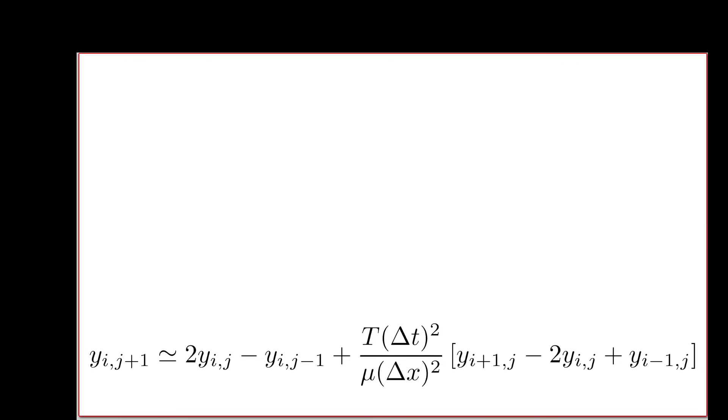The height of the string at some future time at location i depends on its current location, its location very recently in the recent past, and its curvature locally at the current time. We have three times: future, present, and past, and three spatial positions: right, center, and left.